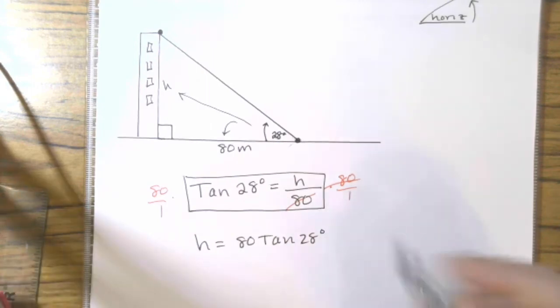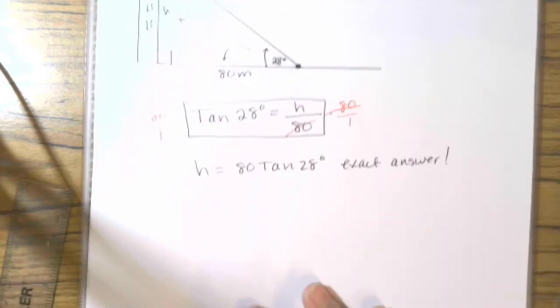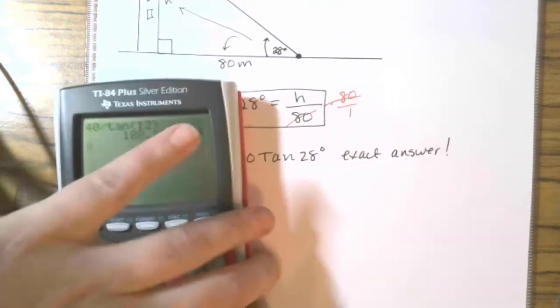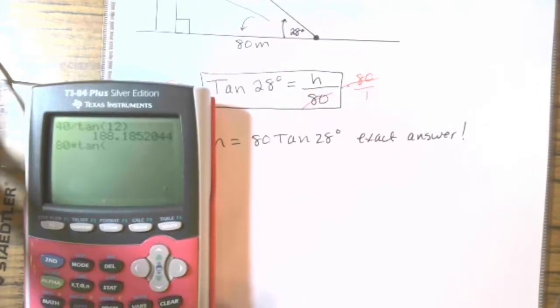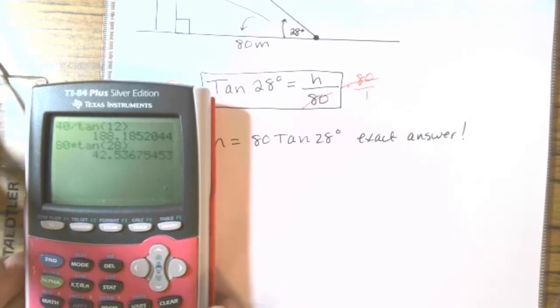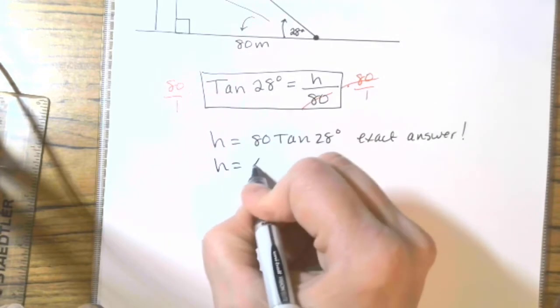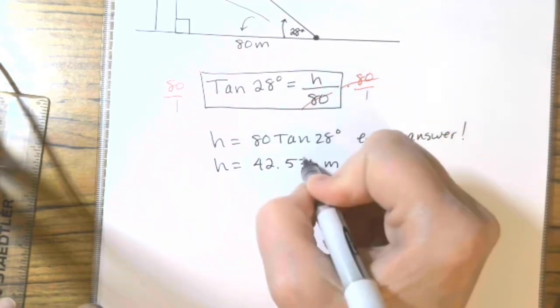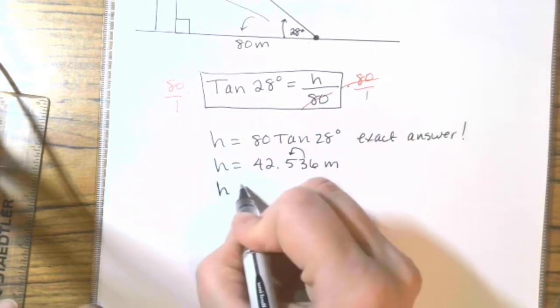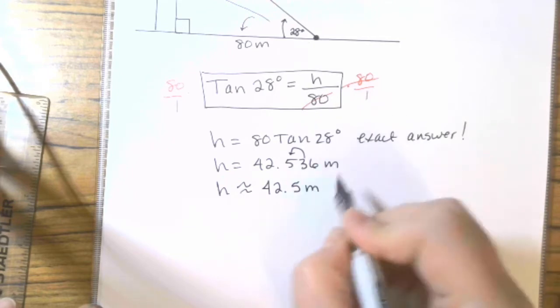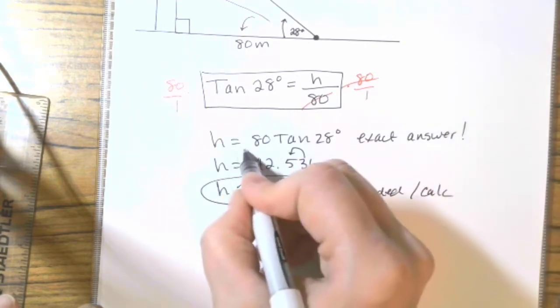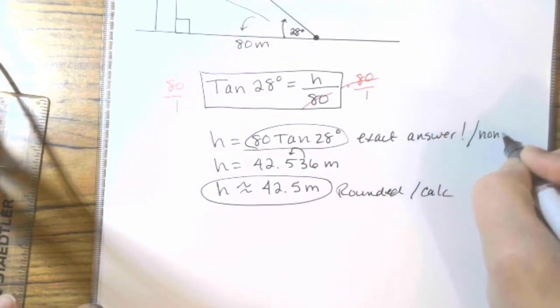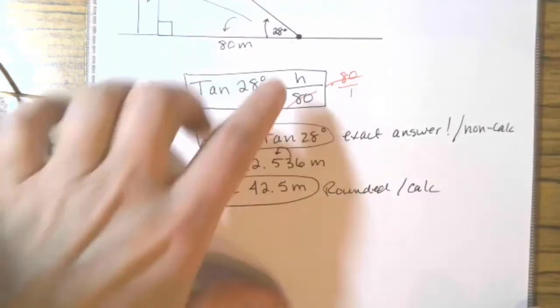Alright. Now, we're ready to. That's an exact answer. With no calculator, that's as far as you could get. That would be your answer, which could happen on a test if it's a non-calculator test. We're going to go with a rounded answer, though. We're already in degrees. So, we're going to do 80 times tangent of 28. We get 42.536 meters. So, again, it makes sense to round to one decimal place. So, the height is 42.5 meters when we round it. So, this is rounded, like on a calculator test. This is not rounded. This is exact answer, like on a non-calculator test. So, two different forms of the answer.